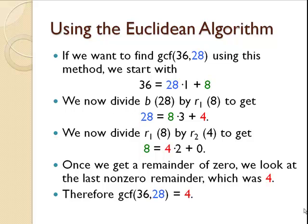Once you get a remainder of zero, you look at the last non-zero remainder, which was 4. So the greatest common factor of 36 and 28 is 4.